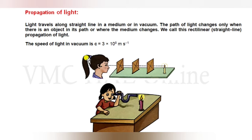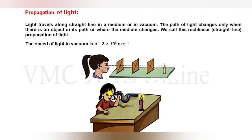Another activity: suppose there is a flame and an observer viewing it through a pipe. If the pipe is straight, the observer can see the flame. But if the pipe is bent, the observer cannot see the flame. This confirms that light propagates in a straight line — when the pipe is bent, light cannot reach the other end.